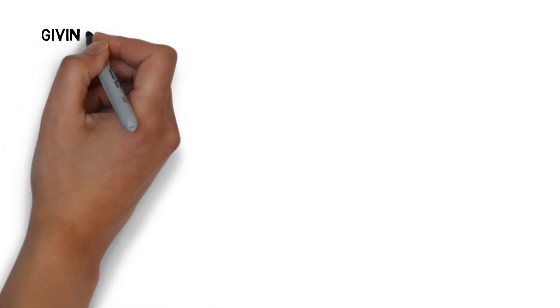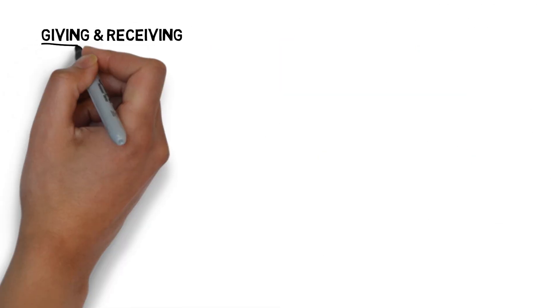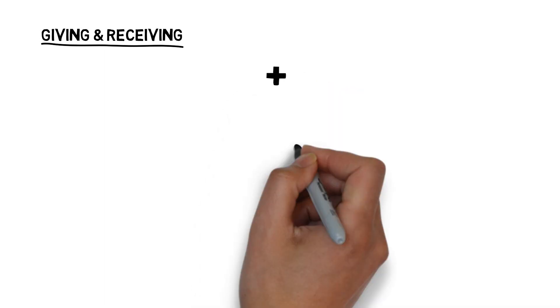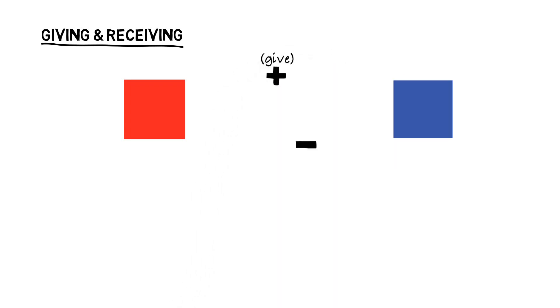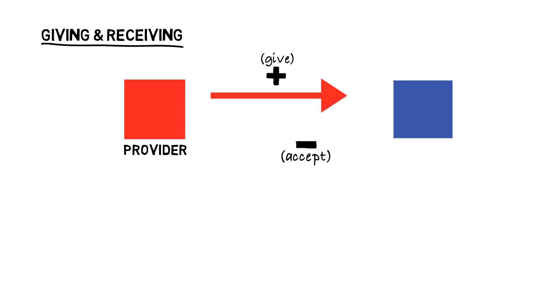Giving and receiving are complementary in promise theory and we label them by a plus and a minus sign, like electrical or magnetic polarities. Plus for give and minus for accept. Intent then flows from agents that promise plus promises to agents that promise minus promises.